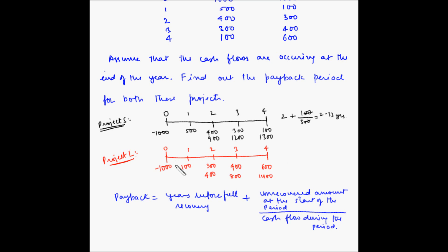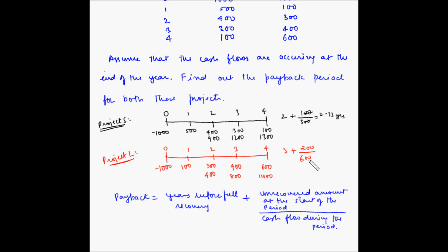Now let's take the case of project L. We want to recover 1000 rupees. At the end of the third year we have recovered 800 rupees, and at the end of the fourth year we will recover 1400 rupees. So years before full recovery is 3, plus the unrecovered amount at the start of the fourth year: 1000 minus 800 equals 200, divided by cash flow during the period. The cash flow in the fourth year is 600 rupees, so this also becomes 1/3, giving 3.33 years.